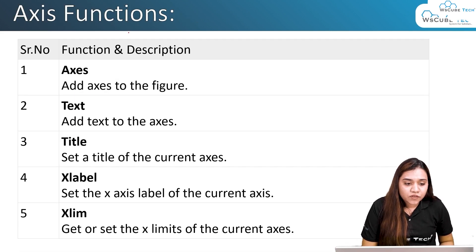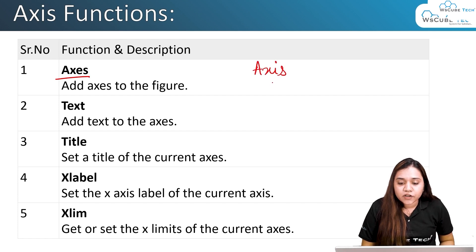After this we have some axes functions. Don't get confused with axes and axis. If we have axis, we are talking about singular one—that means it could be an x-axis or y-axis. This is x-axis and this is y-axis.